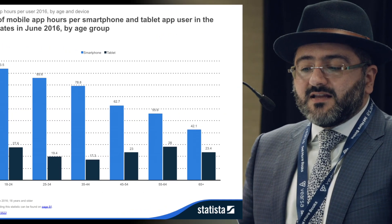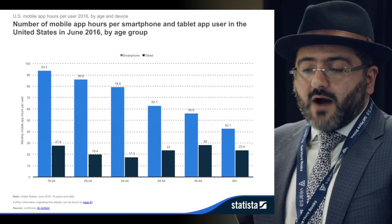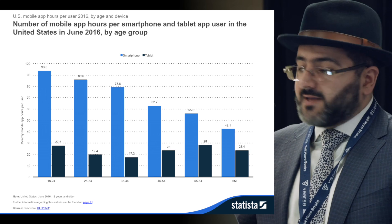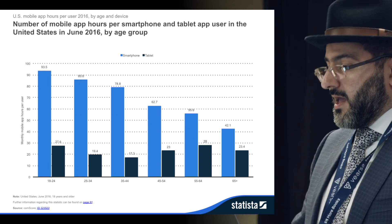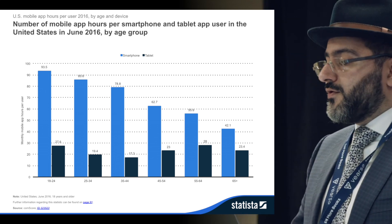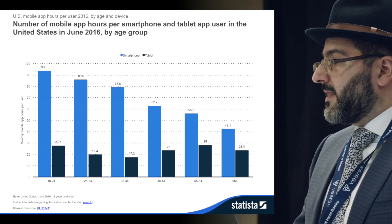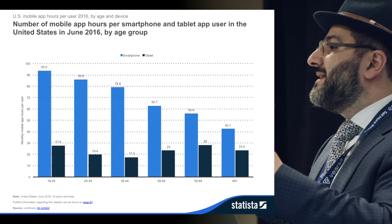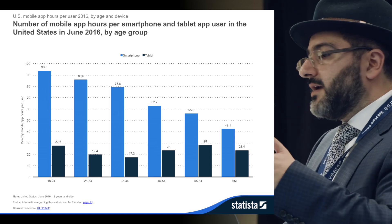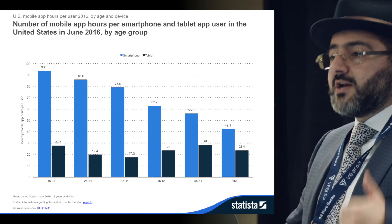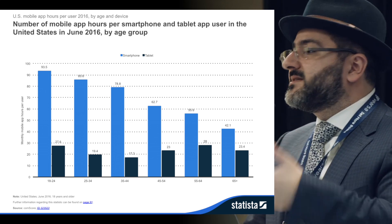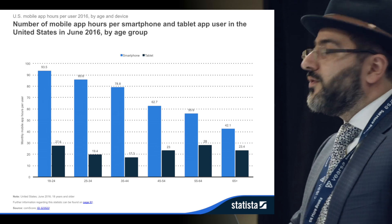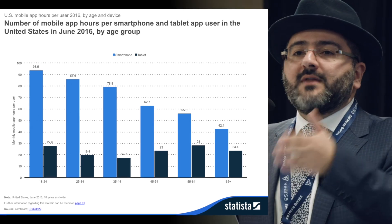Number of mobile app hours per smartphone and tablet: 93 hours per month per user for the 18-to-24 age group on tablets. As you go down in age groups, the 65+ group is at 42.1 hours a month. But this won't necessarily stay static — as those 18- and 24-year-olds become 65-year-olds, their app habits may well continue.